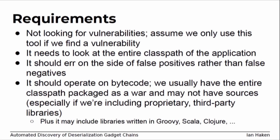So I want to build something that finds gadget chains. I'm not looking for vulnerabilities — I'll only use this new tool if I already know my application is vulnerable. It needs to look at the entire class path, because it doesn't matter what code is in my application; it matters about the sum total of classes on the class path. It should err on the side of false positives because a reasonable overestimation of risk is more useful. And it should operate on Java bytecode, because with JVM languages like Groovy, Scala, Clojure, and Kotlin, I don't want to write something that has to understand each one.